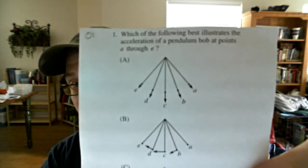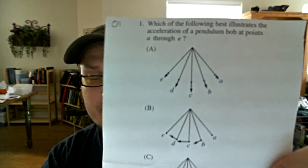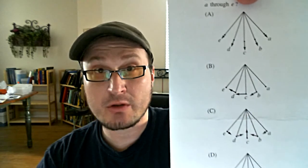Number one: which of the following best illustrates the acceleration of a pendulum bob at points A through E? This represents a pendulum bob — a very standard physics problem. It's asking for the acceleration at those points. There's a trick you want to recognize quickly: you can substitute the net force rather than thinking directly about the acceleration on the pendulum bob. I would be looking for the net force acting on the pendulum bob at those different points.